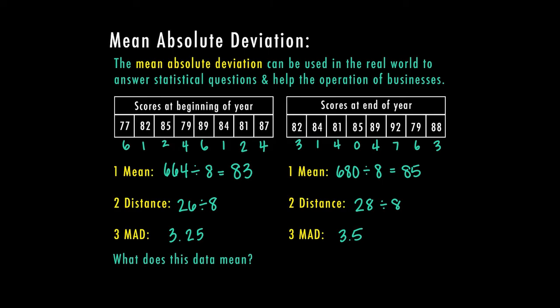So what does this mean? This data can show us that the variability from the average or the mean was greater at the end of the year but the mean did increase. So the average score increased here from 83 to 85. If I look at the mean absolute deviation I can see that it was actually closer to the mean of 83 at the beginning of the year than it was at the end of the year. So that means there was less variability at the beginning of the year from the average score or the mean score.